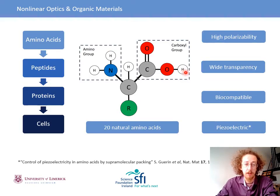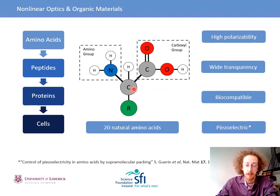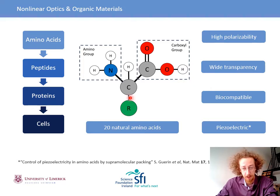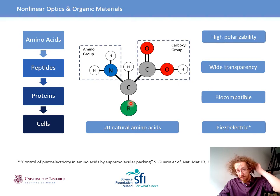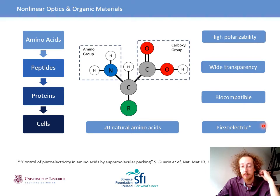What materials are we studying? They're called amino acids. Amino acids are fundamental building blocks of more complicated biomolecules — amino acids can be strung together to make peptides, peptides can be strung together to make proteins, and then proteins go on to make cells. The typical structure has an amino group, a carboxyl group, bonded to a carbon atom, and then a different radical hanging off one side. This radical is what gives us different amino acids, and we're using the simplest achiral one called glycine, where the radical is a single hydrogen. These amino acids have great properties for use in non-linear optics, such as high polarizability, a wide transparency range, biocompatibility, and they're piezoelectric as well.